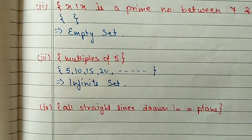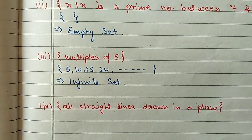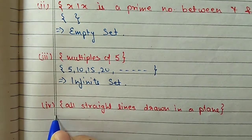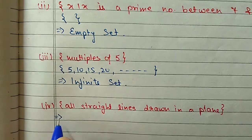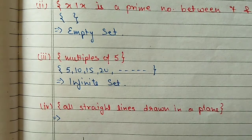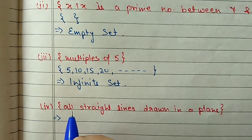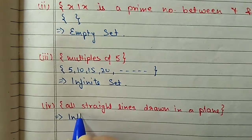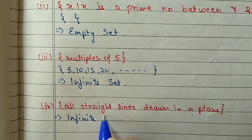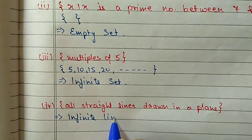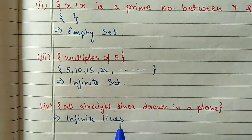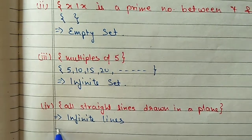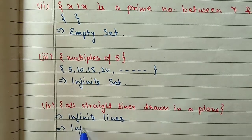Part (iv): all straight lines drawn in a plane. If you have a plane, how many straight lines can you draw? We can draw an infinite number of straight lines. So infinite lines will come - infinite means which we cannot count - and this set will be an infinite set.